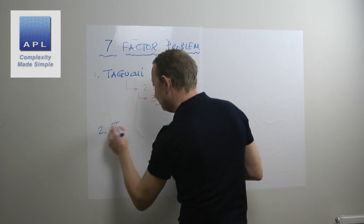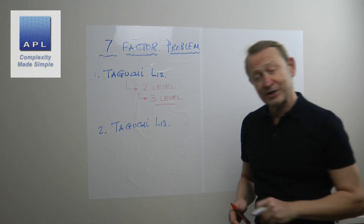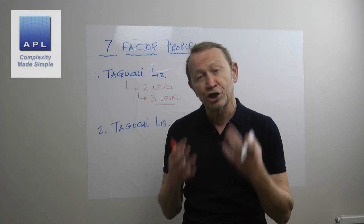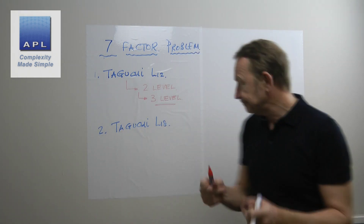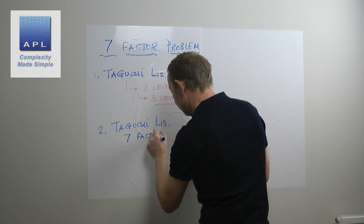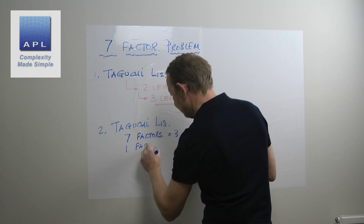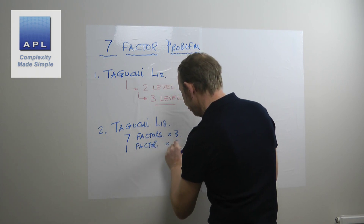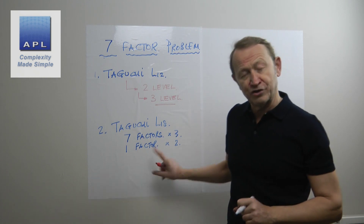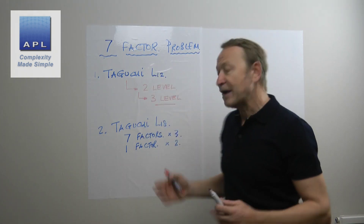Option two is the Taguchi L18. The L18 is going to test in three places, so you're going to check for curvature in this DOE. You can have seven factors at three levels, and one factor is actually at two levels — the first column just asks you to go high and low. But if you don't have that factor, just ignore that column and use the other seven columns.